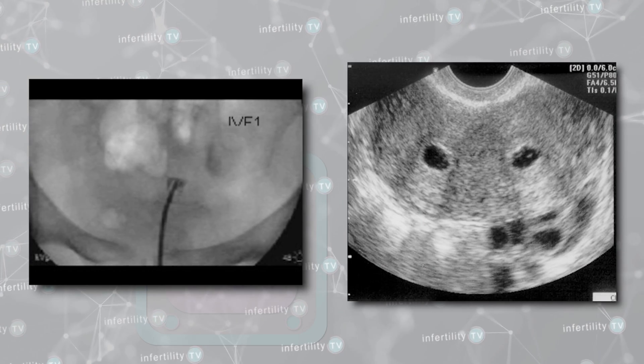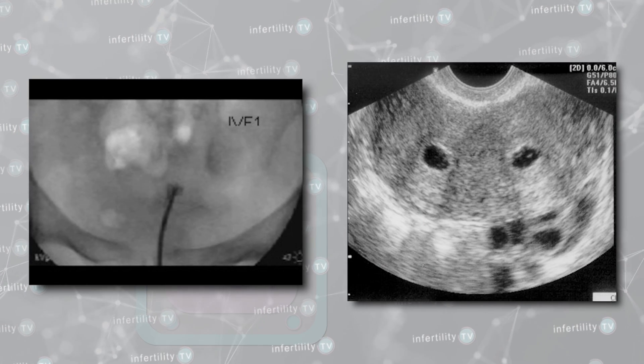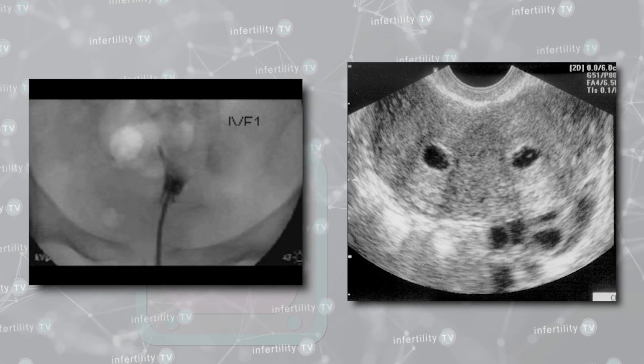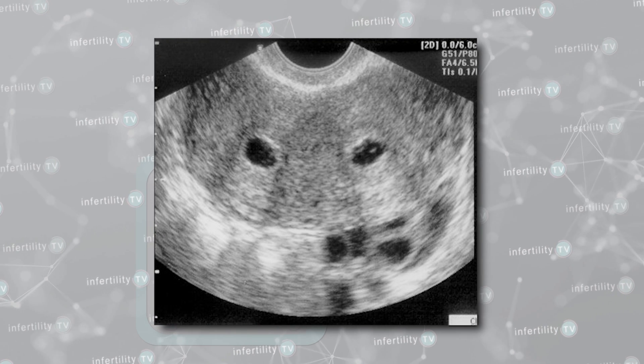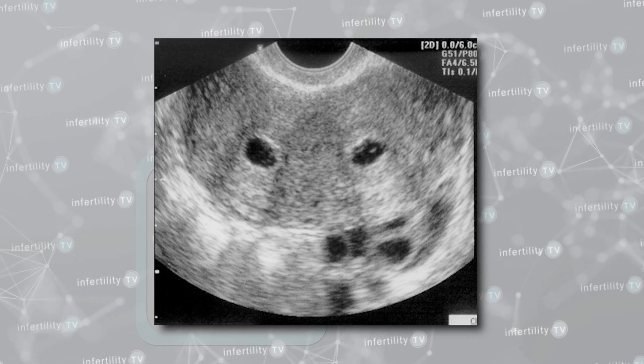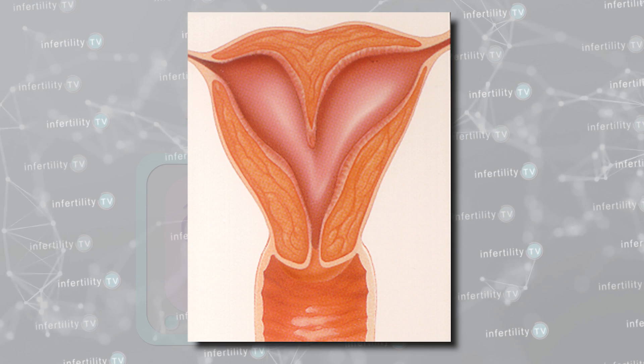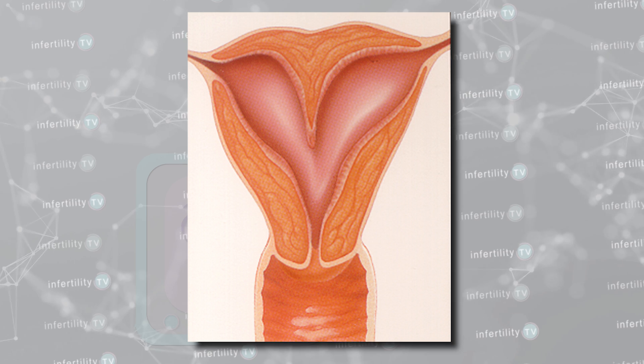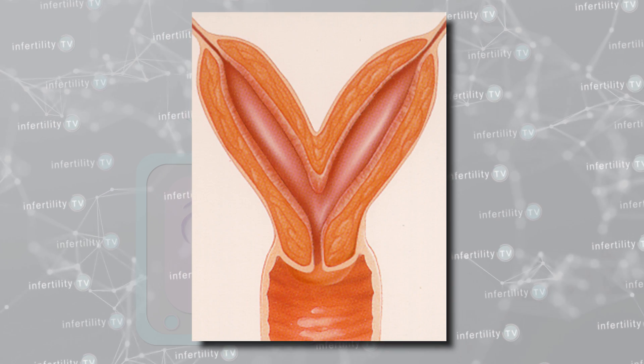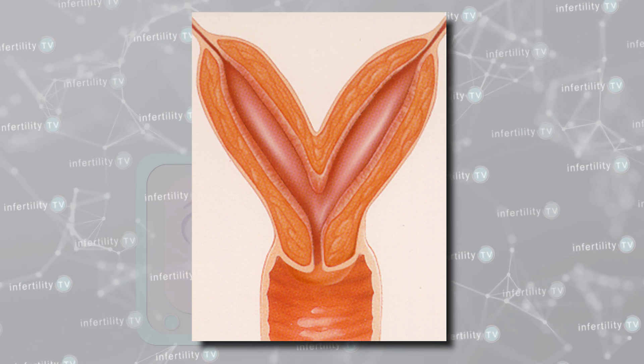The saline ultrasound can show the cavity and the muscle of the uterus and therefore can distinguish between an abnormality called a uterine septum and another type called a bicornuate uterus. The HSG only shows the cavity of the uterus, not the muscle, so you wouldn't be able to tell the difference between those two types of uterine abnormalities.